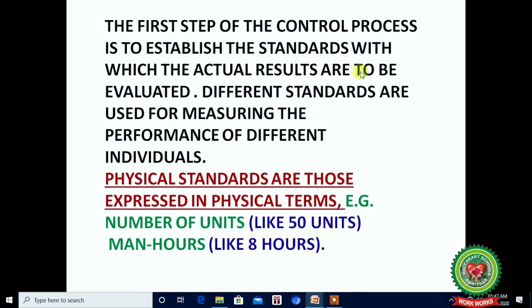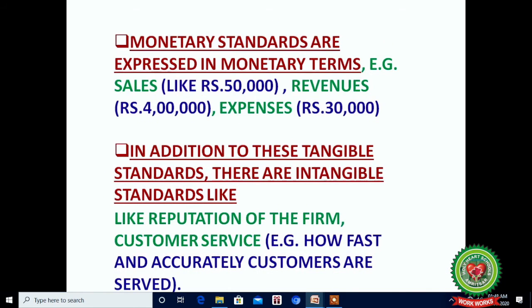The first step of controlling process is to establish standards against which actual results will be evaluated. Physical standards are expressed in physical terms like number of units — for example, 50 units — or man hours like 8 hours set as standard for workers. Monetary standards are expressed in monetary terms like sales of 50,000 or revenue of four lakh rupees or expenses of 30,000. In addition, there are intangible standards like reputation of the firm and customer service — for example, how fast and accurately customers are served.